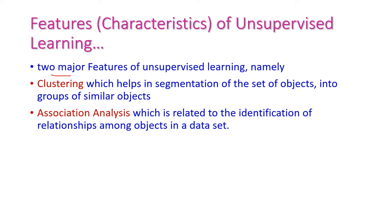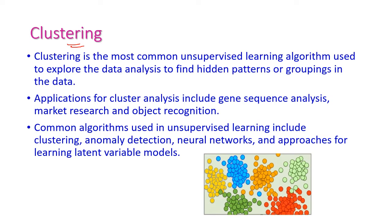There are two major features of unsupervised learning. The first one is clustering, and the second one is association — that is, association analysis. Clustering means it segments the set of objects into a group of similar objects. Association is related to identifying the relationships among the objects in the data set. Let us see something about clustering — it is the most common unsupervised learning algorithm, which is used to explore data analysis to find the hidden patterns or groupings in the data.